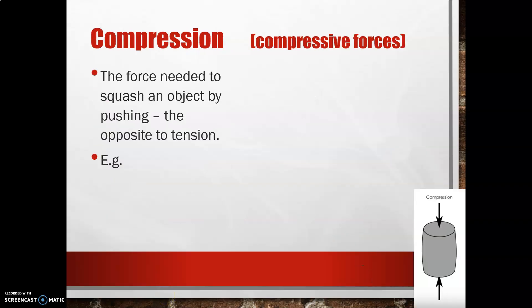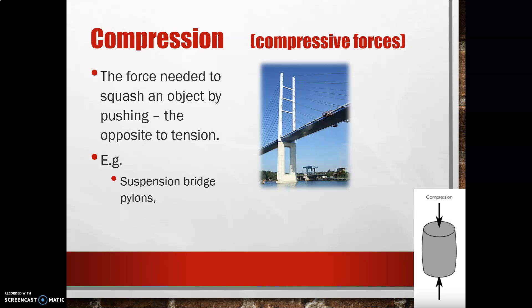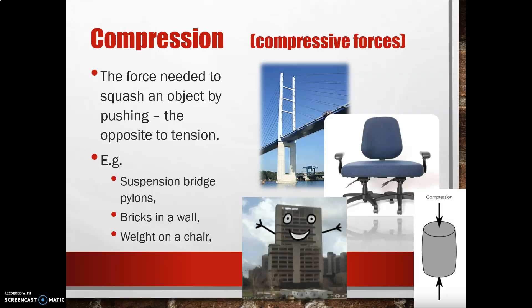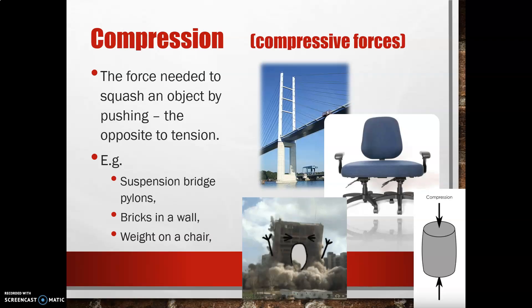Let's start with the easiest one first. Compression is the force needed to squash an object by pushing, and it's in opposition to tension. A suspension bridge pylon has compressive strength — the pylon is the part that goes up and down. So do bricks in a wall for similar reasons. If you were to sit down on a chair, that chair has compressive strength holding you up. And of course, if we don't have enough compressive strength, the building will fall down.